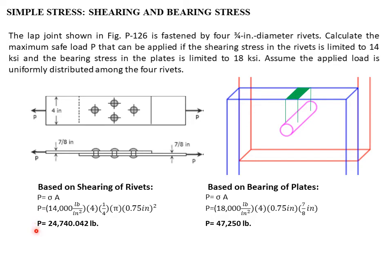We have two load values considering shearing and bearing stress. The safe value is the lower one: 24,740.042 pounds. If we apply the higher load considering bearing of plates, it exceeds the allowable load for shearing, and it will over-stress the rivets. Let's verify this using computation.